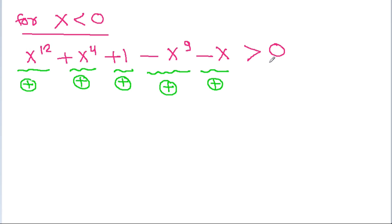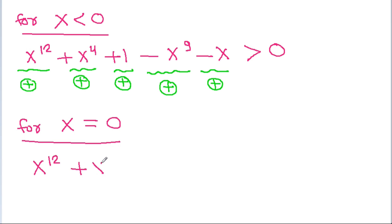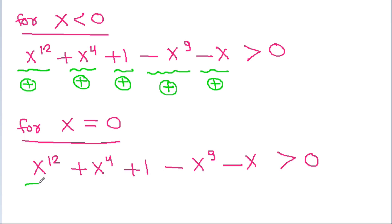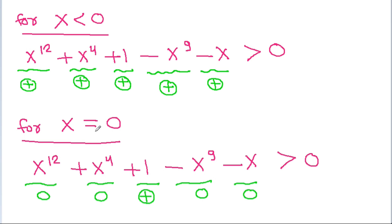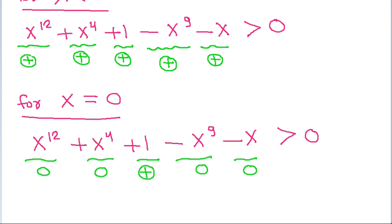For x equal to 0, we have x power 12 plus x power 4 plus 1 minus x power 9 minus x greater than 0. At x equal to 0, x power 12 is 0, x power 4 is 0, minus x power 9 is 0, and minus x is 0, so the expression equals 1, which is positive. So for x equal to 0, the expression is also positive.